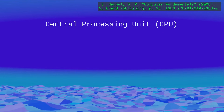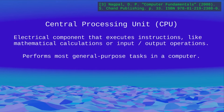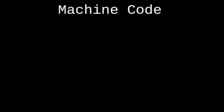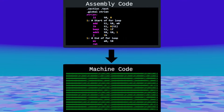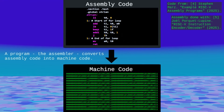A central processing unit, or CPU, is an electrical component in a computer that executes instructions, like mathematical calculations or input-output operations. It works by reading machine code, a sequence of instructions that looks like this. Writing machine code by hand is extremely tedious and error-prone, so since the 1940s, people have been using assembly languages. They map machine code instructions to simple mnemonics, which facilitates programming.